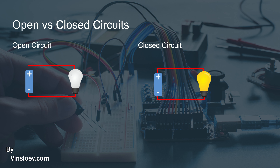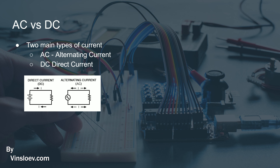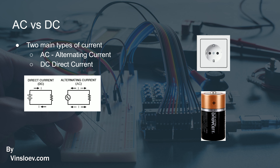When that happens, you are no longer completing the connection to the positive terminal, meaning that the light bulb switches off. And when you turn your device on again, this connection is remade. That is basically how closed and open circuits work, and how you can differentiate between the two types of current — AC and DC.